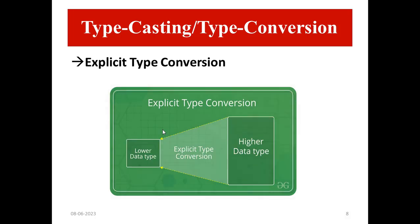The syntax for explicit type casting is: first the name of the data type, then the expression name. The name of the data type refers to the name of that data type to which we want to convert the available data types in the code. The expression can be a constant, variable, or even an actual expression in the program.